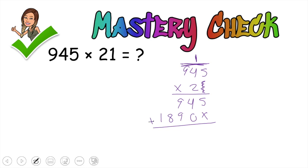5 plus 0 is 5. 4 plus 0 is 4. 9 plus 9 is 18. The 1 goes up here and the 8 goes here. 8 plus 1 is 9. And 1 plus 0 is 1. So our final answer is 19,845.